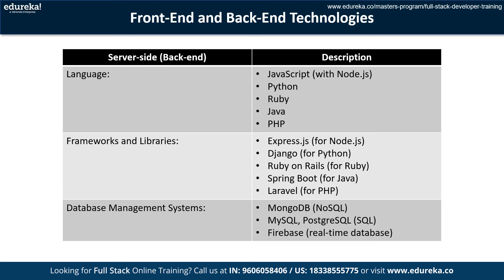For database management systems, back-end developers use MongoDB — a document-oriented NoSQL database known for flexibility and scalability, storing data in JSON-like documents; MySQL and PostgreSQL — relational database management systems using structured query language, widely used for transactional applications; and Firebase — a real-time database service by Google offering cloud-hosted NoSQL databases and back-end services for mobile and web applications.